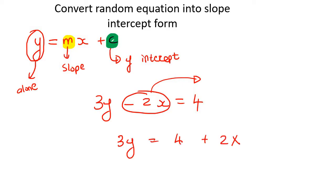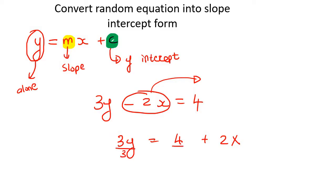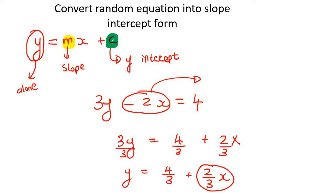The next step is you need to get rid of this 3. Some people say the y is by itself, but it's not — that 3 needs to be taken away. You would do that by dividing everything by 3. So what you would then end up with is y equals 4 over 3 plus 2 over 3x. You could also write it as 2x over 3; it doesn't really matter.